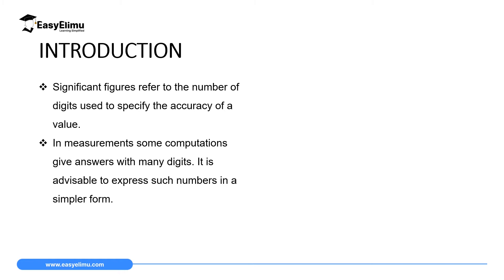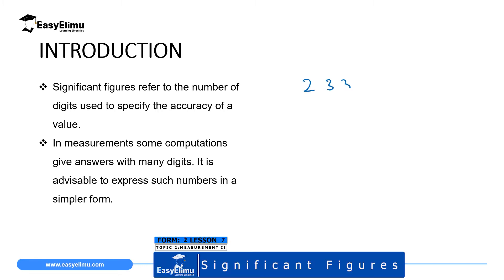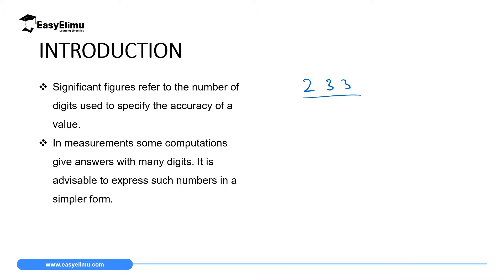Significant figures are digits in a number that carry meaning which contribute to its measurement accuracy. For example, if you have a number like 233, this number is so precise that someone can know you have 200, and on top of 200 you have 30, and on top of 30 you have 3. The first two digits represent hundreds, the next represents tens, and the last represents ones.